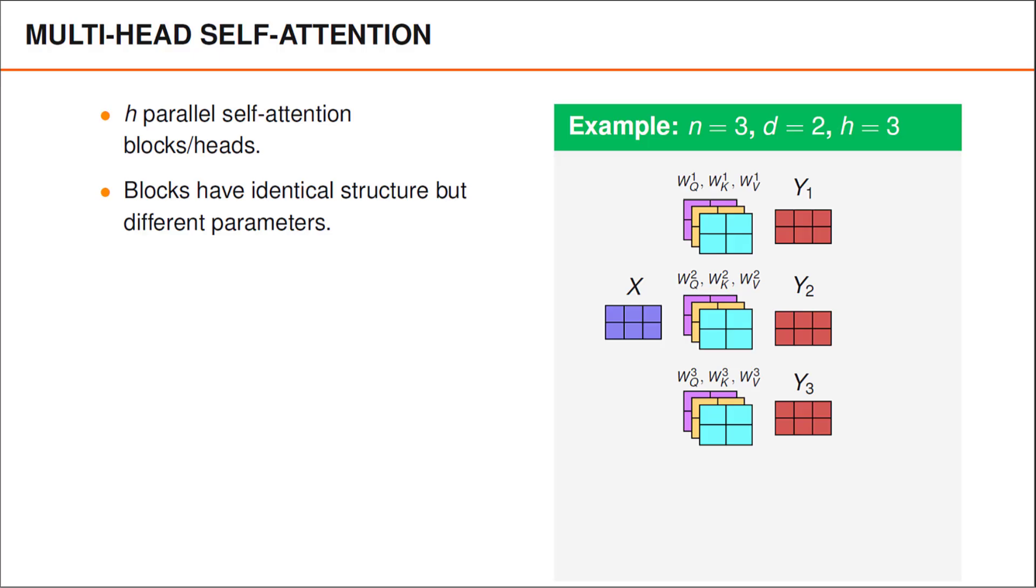In the toy example to the right, we have n equals 3, which means that there are three input words. d is equal to 2, which means that the word embeddings are only two elements long. The input matrix, capital X, is therefore 2 by 3, where 2 is the length of our embeddings, and 3 is the number of input words. In the example, we assume that h is 3, such that there are three heads. Each head has its own weight matrices, WQ, WK and WV, and in this case we therefore have nine such matrices with trainable parameters.